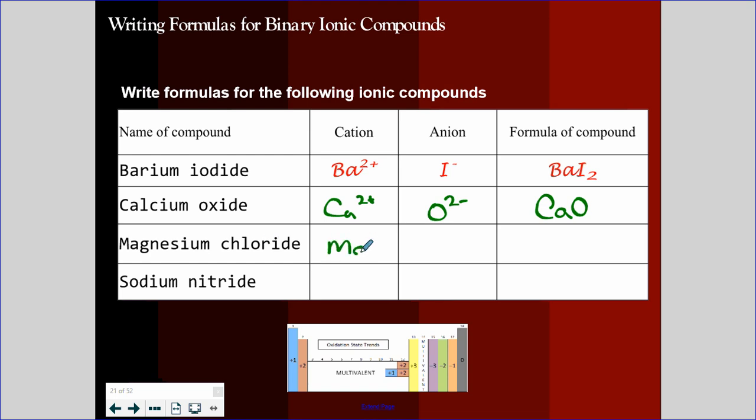Since calcium needs to lose two and oxide needs to gain two, it's CaO. Magnesium chloride. Magnesium needs to lose two. We just did that one. Chloride. It's the same as in fluorine. So this should be analogous to magnesium fluoride, where we need two chlorides to satisfy magnesium. MgCl2.